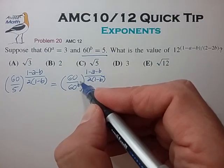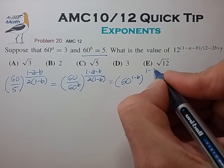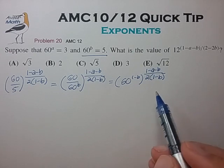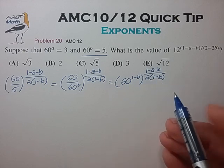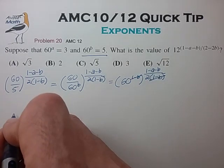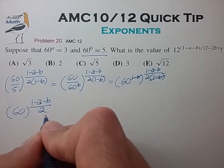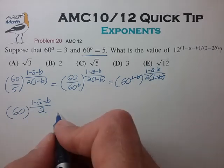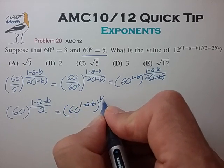And now using the division rule for exponents, we can write this as 60 to the 1 minus b, again to this exponent on the outside. And this is probably the first point in the problem where we see we're on the right track, because we notice that we have some cancellations in these nested exponents. We have the factor of 1 minus b on the inside and the outside. So we can simplify this further to find this is equal to 60 to the 1 minus a minus b over 2. And now we can notice we can bring the factor of 1/2 to the outside and create the nested exponent 60 to the 1 minus a minus b to the 1/2.